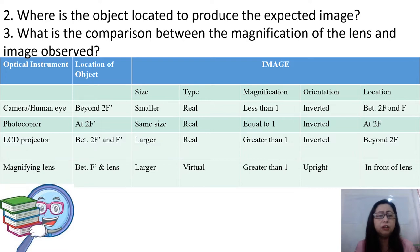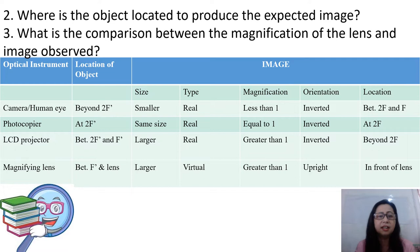What is the comparison between the magnification of the lens and the image observed? For the human eye and camera, since the image is smaller than the object, the magnification is less than 1. For the photocopier, the image has the same size as the object, so the magnification is equal to 1. For the LCD projector and the magnifying lens, since the image produced is larger, the magnification is greater than 1.